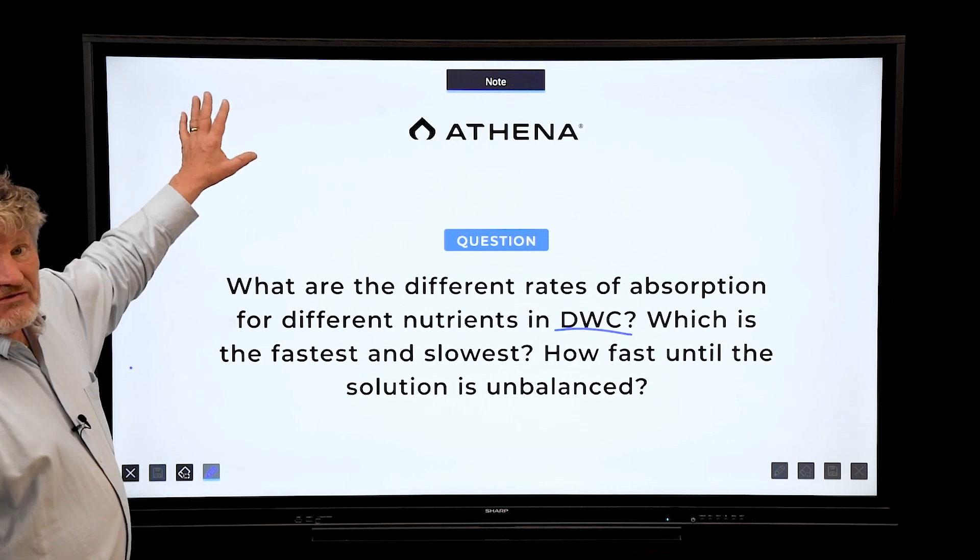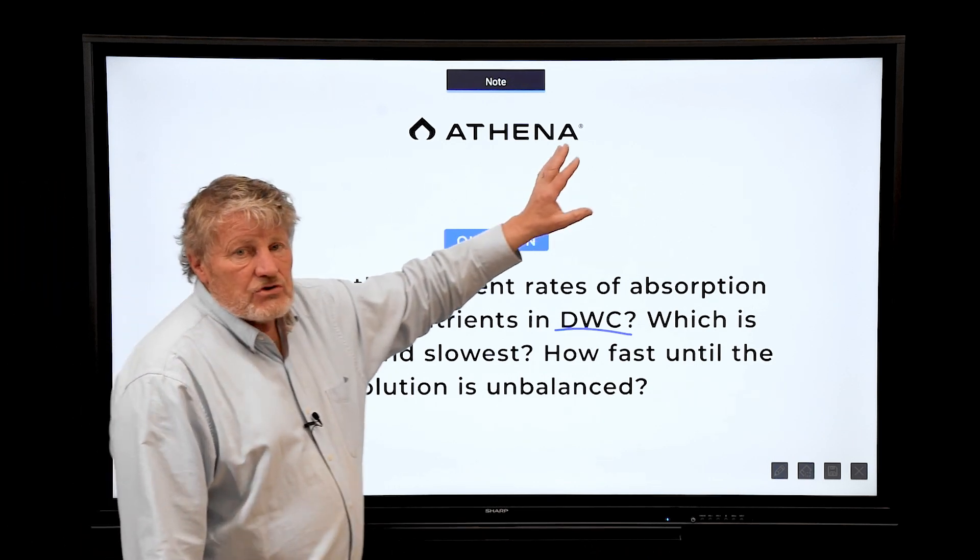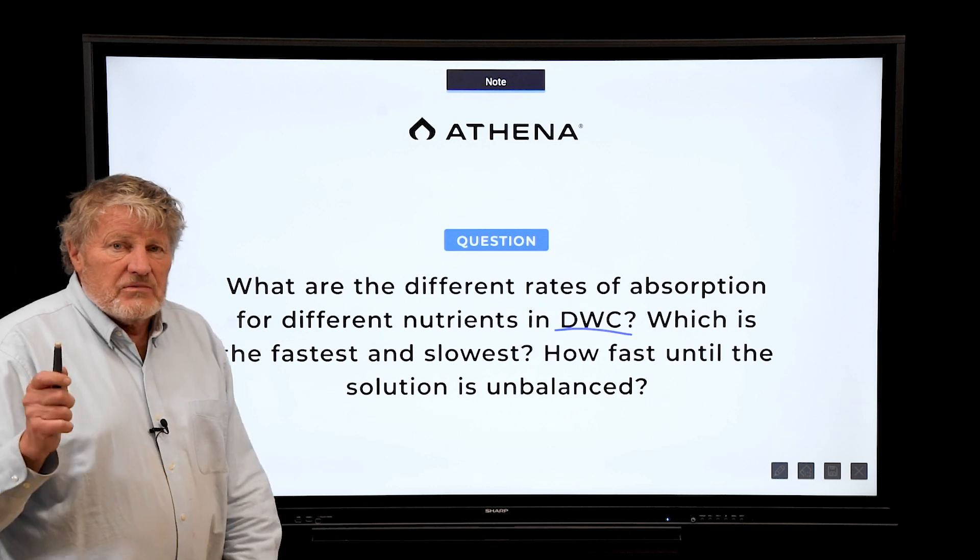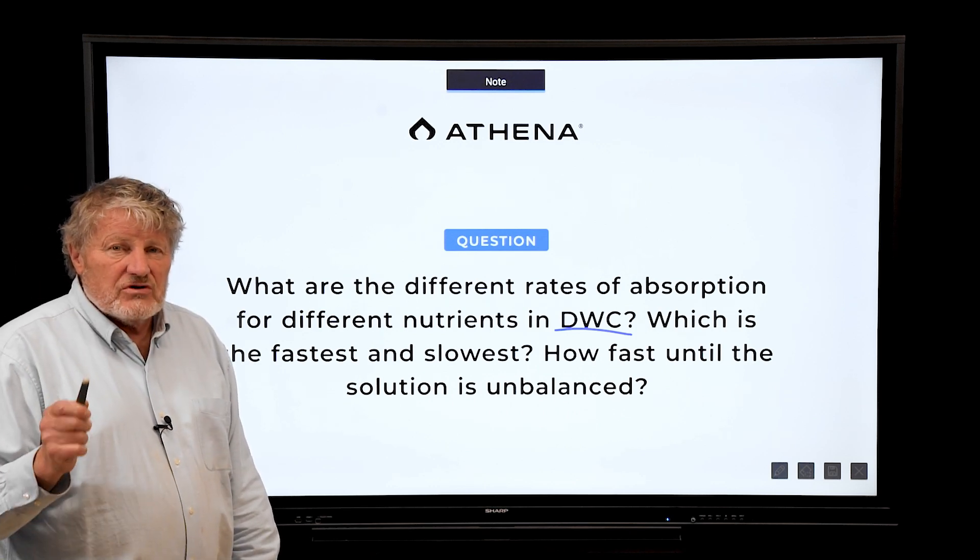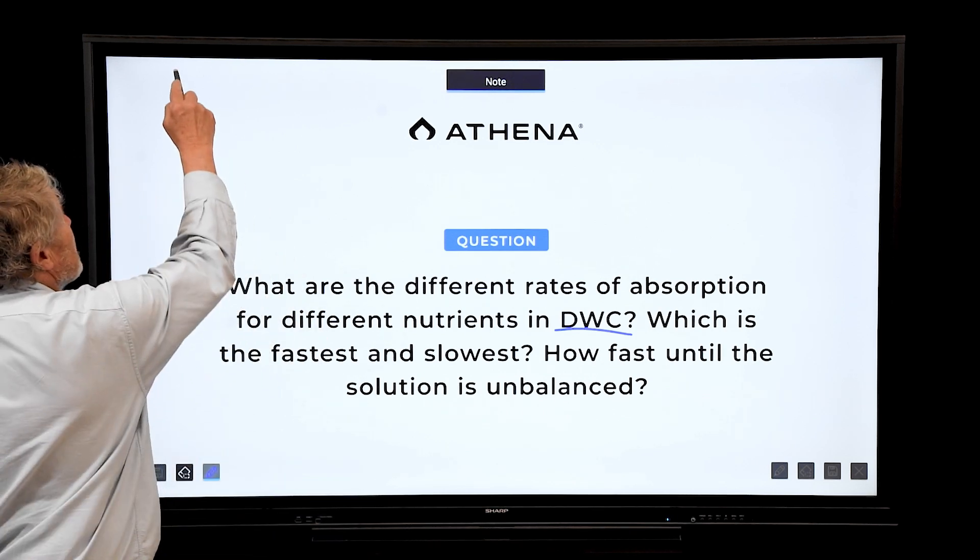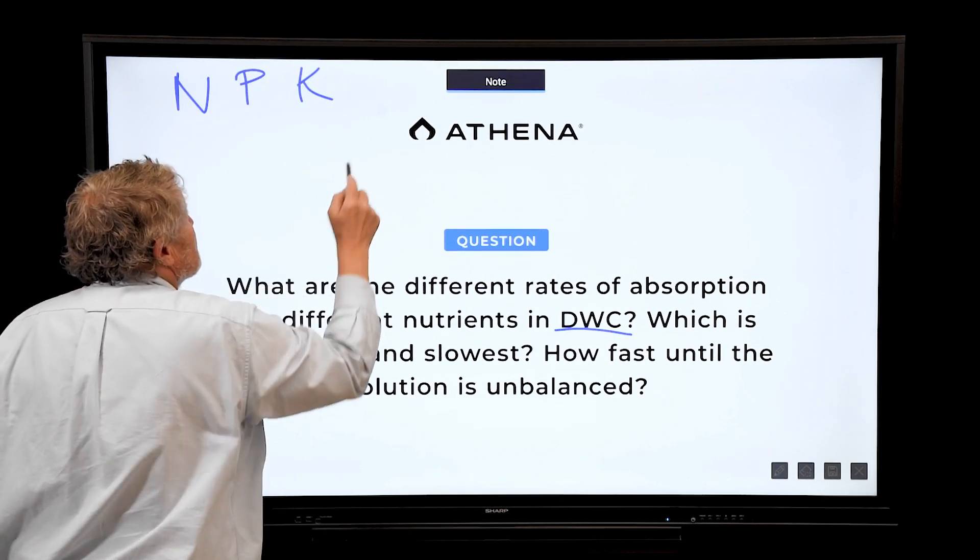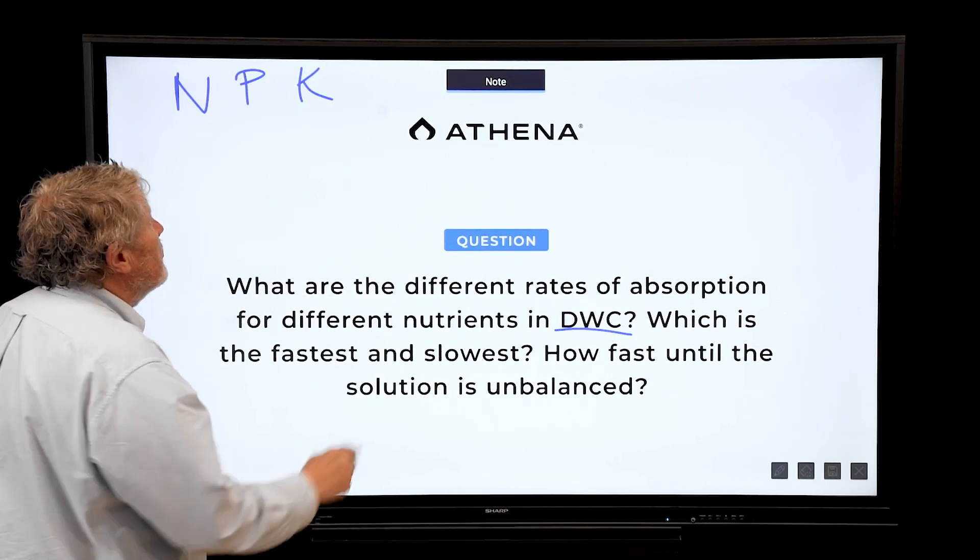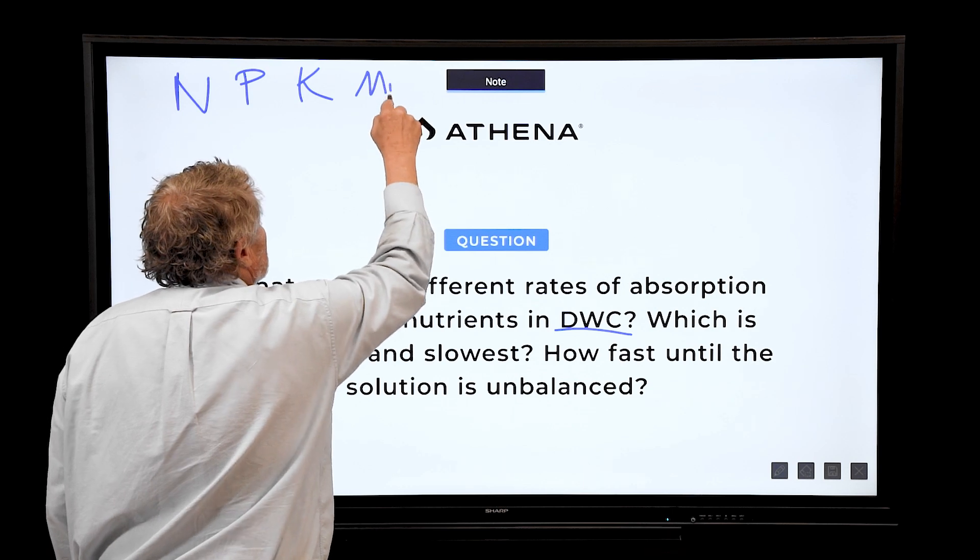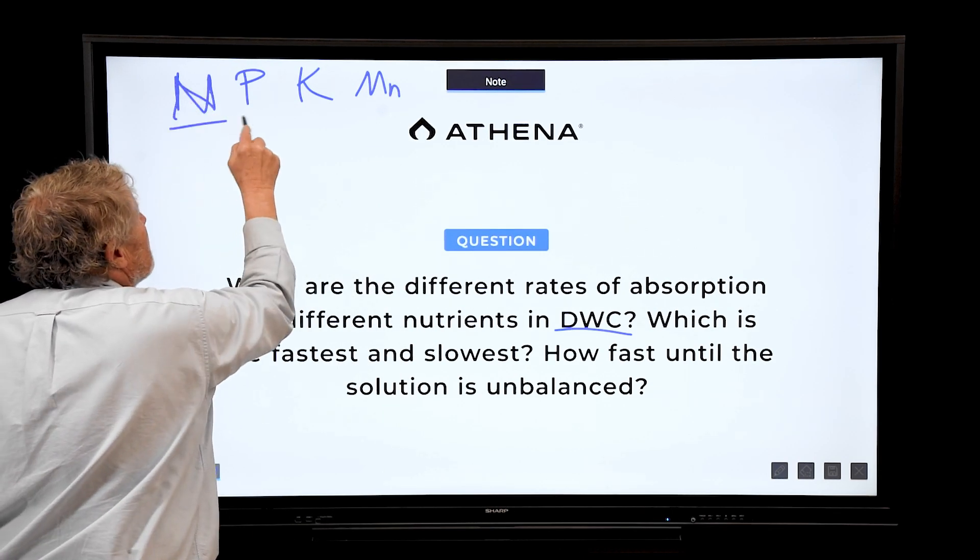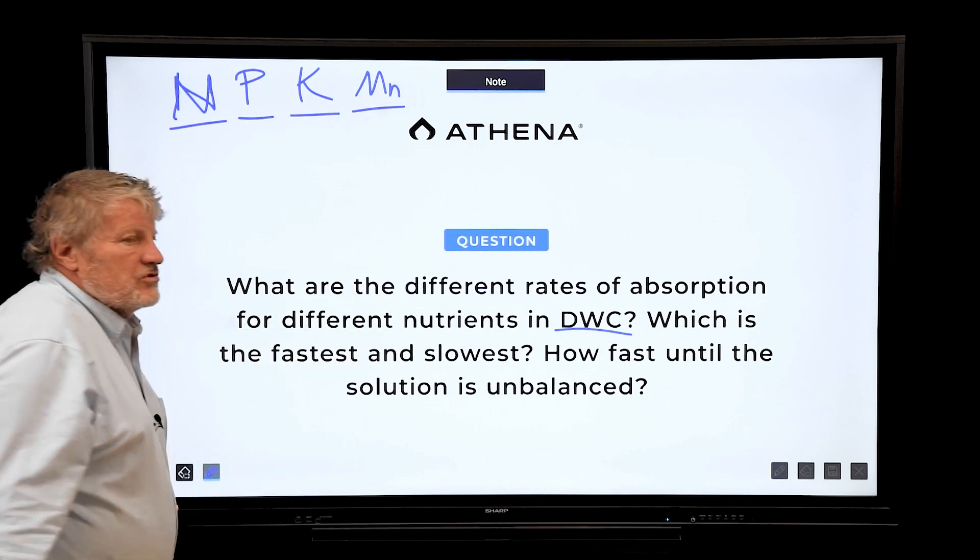So I'm going to put the fast nutrients here and the slow nutrients here. There's four elements that are lightning fast compared to everything else and they are nitrogen, phosphorus, potassium, and manganese, the micronutrient manganese. NPK manganese.